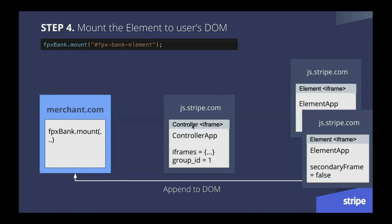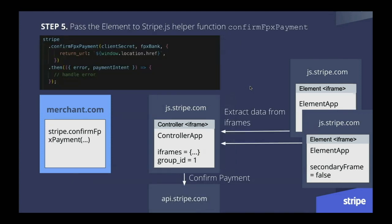In the fourth step, we still don't see any UI. We need to add the mount — the entire iframe created in the previous step — into the user's page. This is where the mount step comes into play. Finally, we will see the UI and the user can click to pay with FPX. This is where the entire redirect logic comes in. Confirm FPX payment takes care of extracting which bank was selected by the user from the element, passes this information to Stripe servers, and Stripe servers decide where to redirect the users. That's where we saw the redirect and then coming back to the original merchant site — all handled within confirm FPX payment.